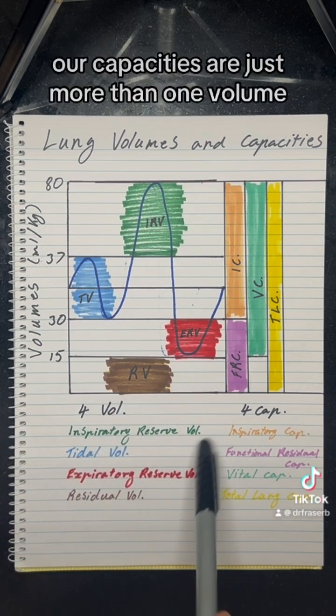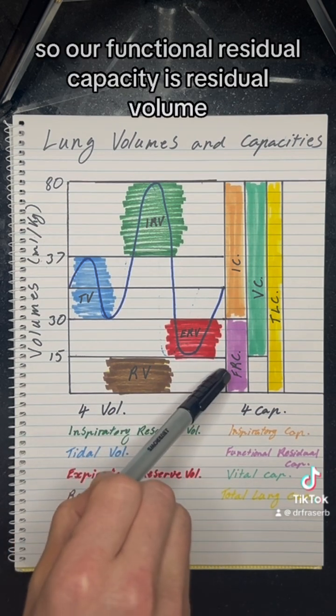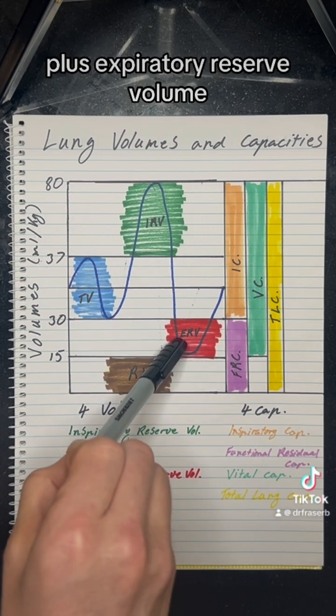Our capacities are just more than one volume, so our functional residual capacity is residual volume plus expiratory reserve volume.